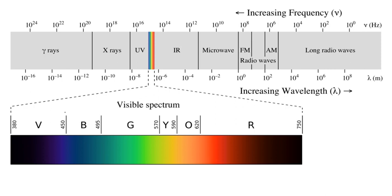In physics, electromagnetic radiation refers to the waves, or their quanta, photons of the electromagnetic field, propagating through space, carrying electromagnetic radiant energy. It includes radio waves, microwaves, infrared, visible, ultraviolet, X-rays, and gamma rays.